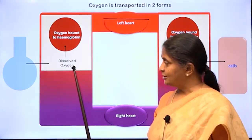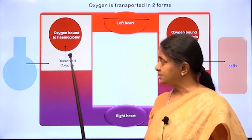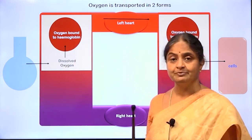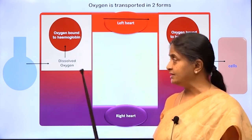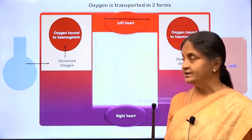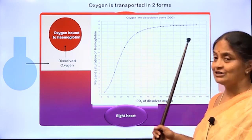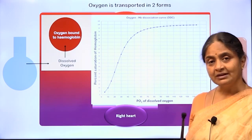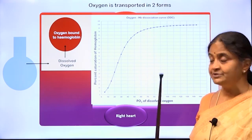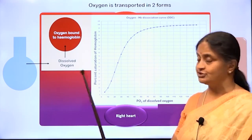Dissolved oxygen can be thought of as forming the interface between alveolar oxygen and oxygen bound to hemoglobin. It is what equilibrates with alveolar oxygen and in turn determines how much oxygen is bound to hemoglobin. The relationship between dissolved oxygen and oxygen bound to hemoglobin is what we study as the oxygen-hemoglobin dissociation curve, which describes how much oxygen dissociates from hemoglobin as the partial pressure of dissolved oxygen reduces.